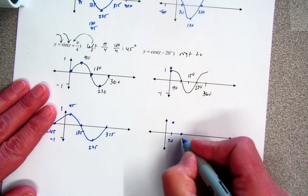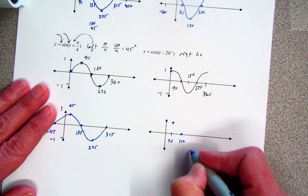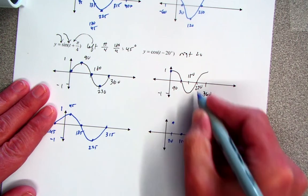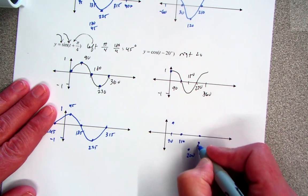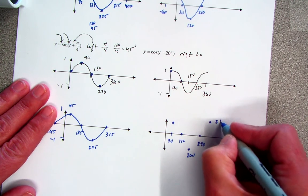90 shifted over 20 is 110. 180 shift 20, which is down here, which is 200. 270 shift 20 to the right, and 360 shift 20 would be 380.